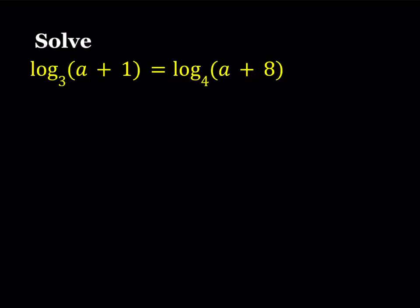And that property basically looks like the following: if you have log base b of x equals log base b of y, we can safely say that under certain conditions like b has to be greater than 0 and different from 1, x and y are both positive, then this would imply that x equals y.